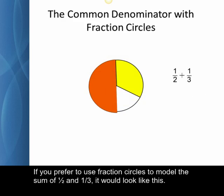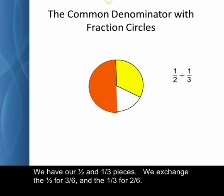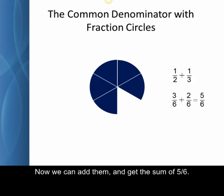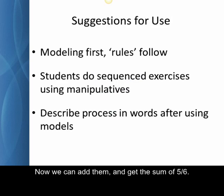If you prefer to use fraction circles to model the sum of one-half and one-third, it would look like this. We have our one-half and one-third pieces. We exchange the one-half for three-sixths and the one-third for two-sixths. Now we can add them and get the sum of five-sixths.